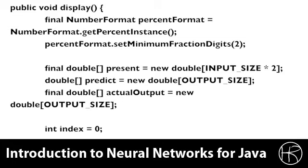It begins by creating a present variable that is going to hold the data that will be presented to the neural network. It's output size times two because we're passing in both the S&P 500 historical data as well as the prime interest rate.